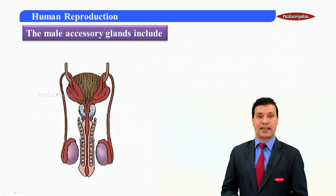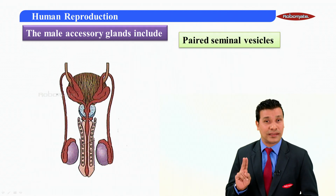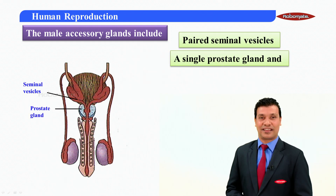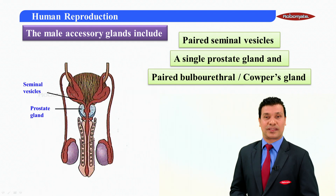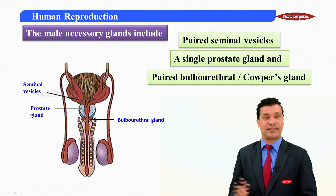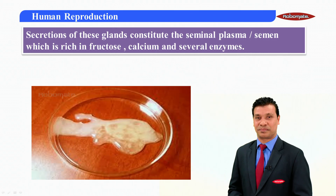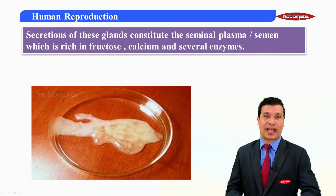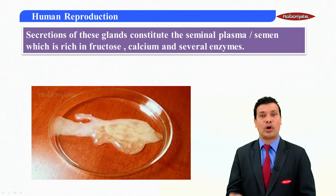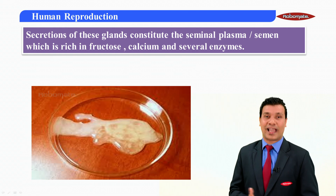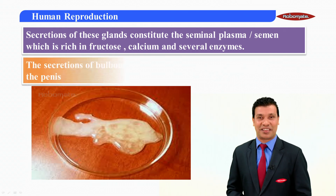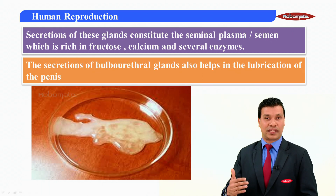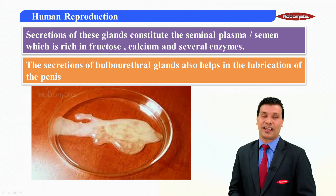The main accessory glands include the paired seminal vesicles, a single prostate gland, and the paired bulbo-urethral gland which is also known as Cowper's gland. Secretions of all these three glands constitute the fluid called seminal plasma, or semen, which is rich in fructose, calcium, and several enzymes. The secretions of the bulbo-urethral gland also help in the lubrication of the penis.